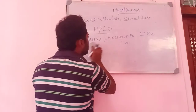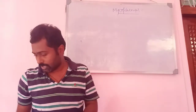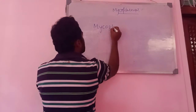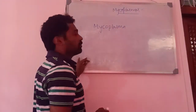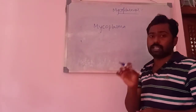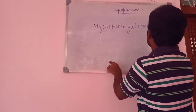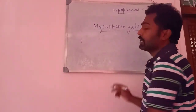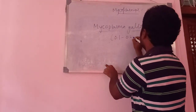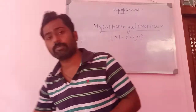Mycoplasmas are the smallest living cells that can survive in anaerobic conditions. The even smallest species is Mycoplasma gallisepticum, which measures about 0.1 to 0.25 microns in size. This is frequently asked in examinations.